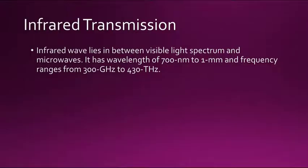Today's topic is infrared transmission. Infrared wavelength lies in between the visible light spectrum and microwave. Infrared waves have a wavelength of 700 nanometers to 1 millimeter, and frequency ranges from 300 gigahertz to 440 terahertz.